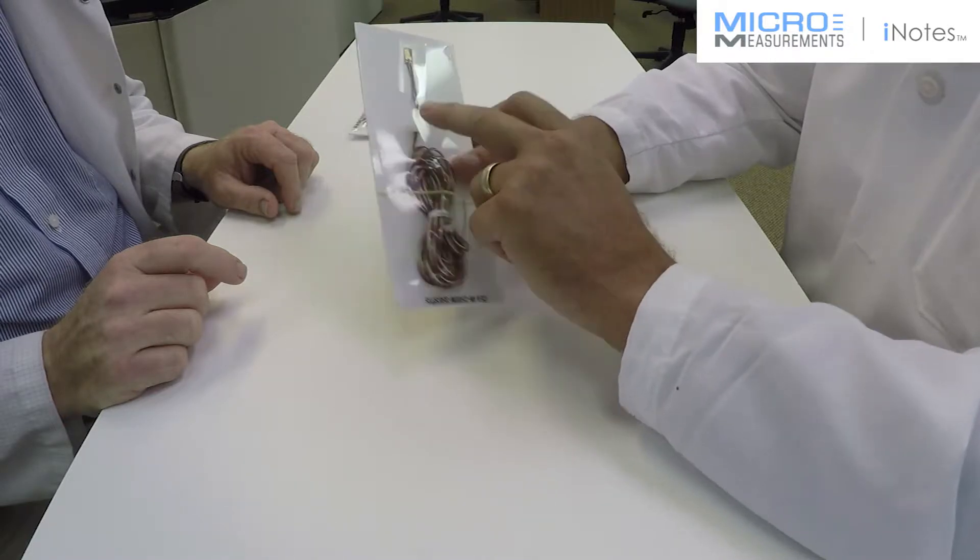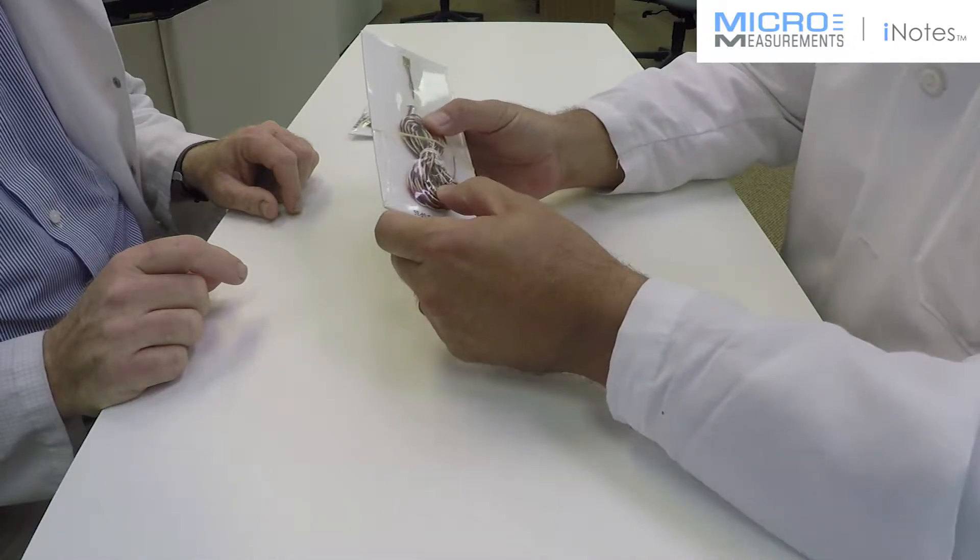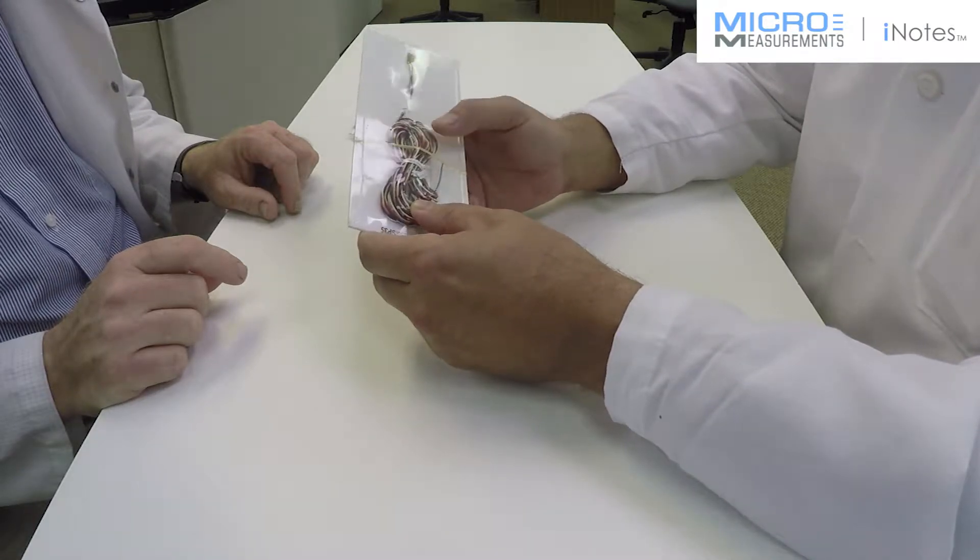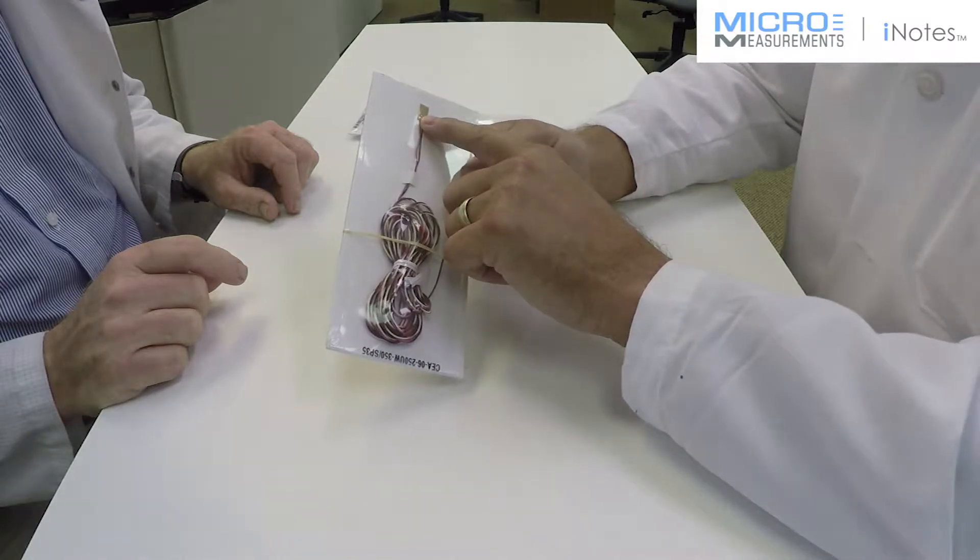One of the things that's new is that we're actually using a Teflon insulated wire. The Teflon is going to be rated to about 400 degrees Fahrenheit. We're using a higher temperature solder.